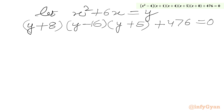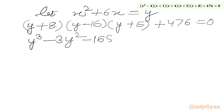Now we have to simplify the left-hand side by multiplying all three brackets and then adding 476. We end up with the cubic equation y³ - 3y² - 168y - 164 = 0.